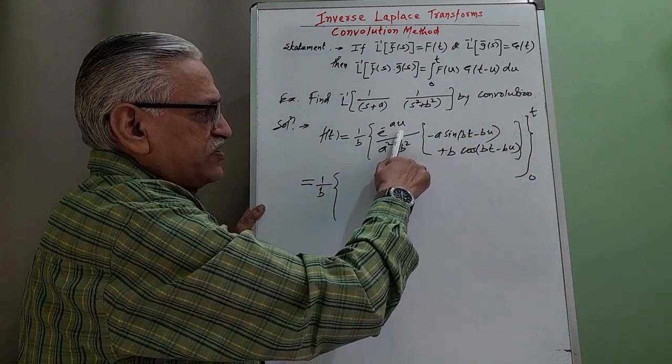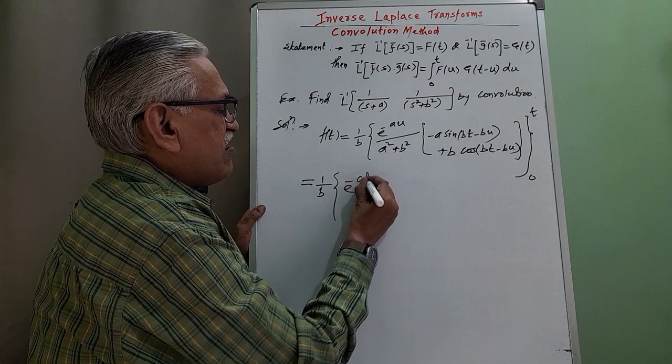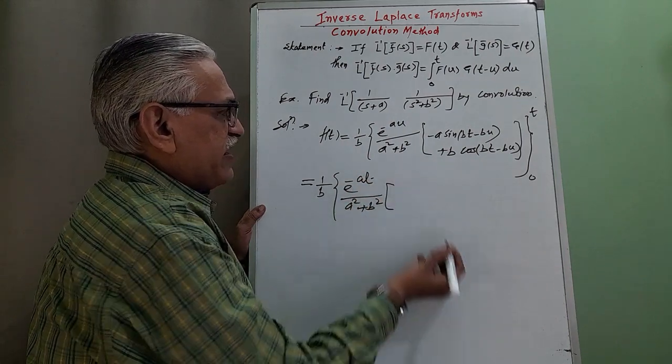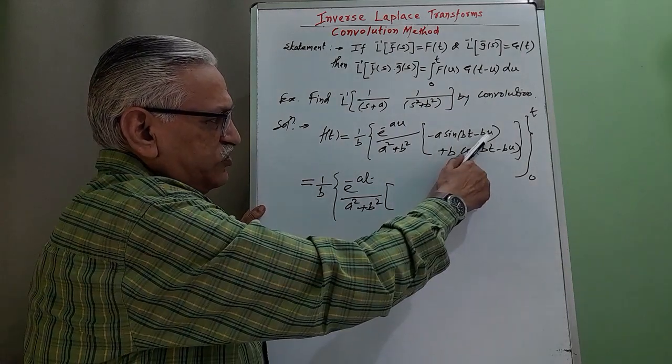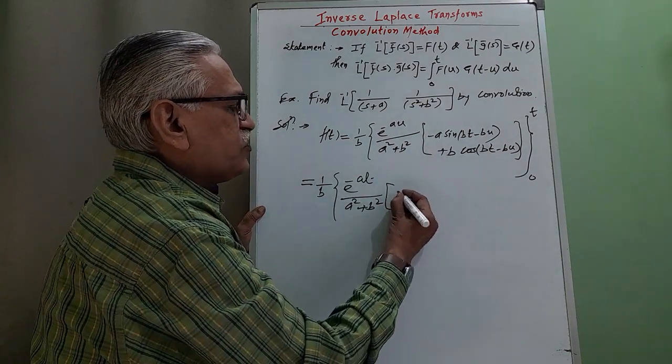Substituting the upper limit for u as t here, we get e raised to minus at divided by a square plus b square multiplied by when u is t sin bt minus bt.